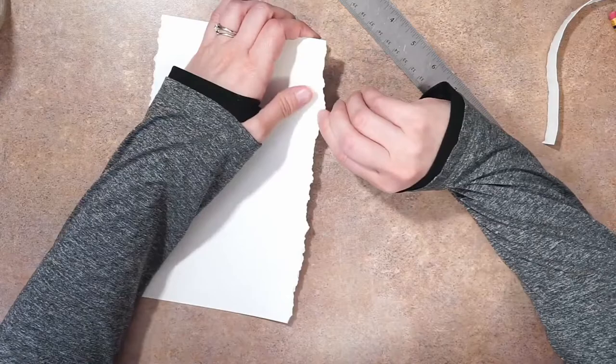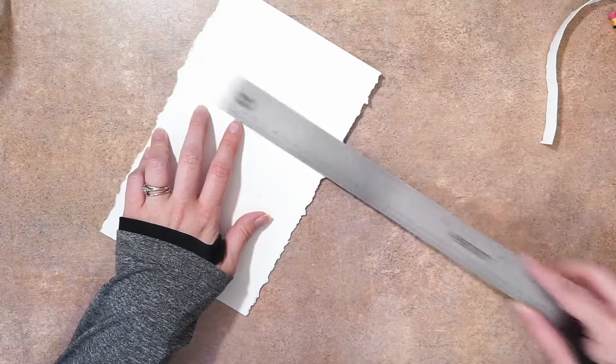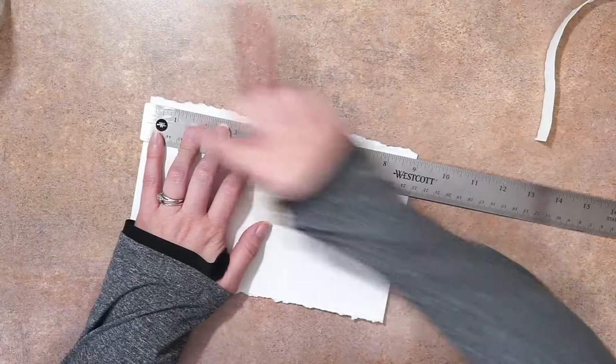Now what we're going to do is, since I want five and a half by five and a half, we've got five and a half this way, so now we want to do it this way. We're going to take some off of this side and some off of this side. I'm going to take an inch off of this side.